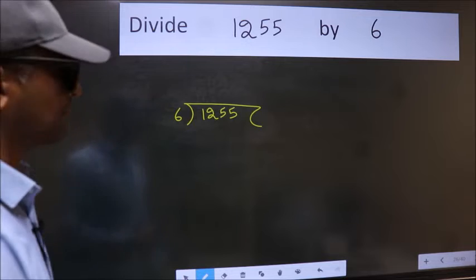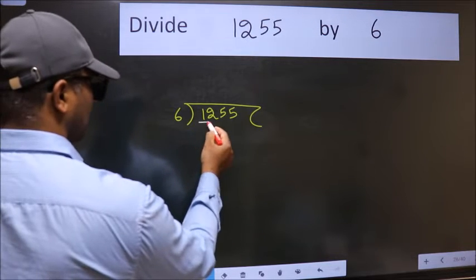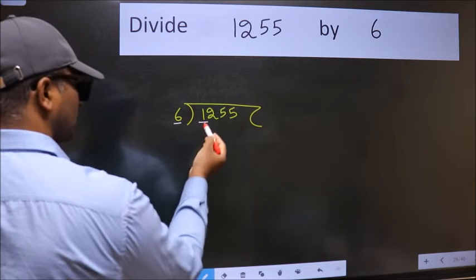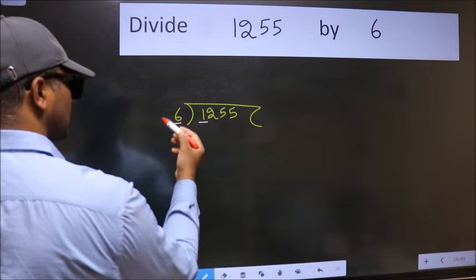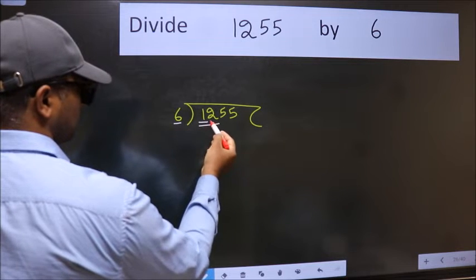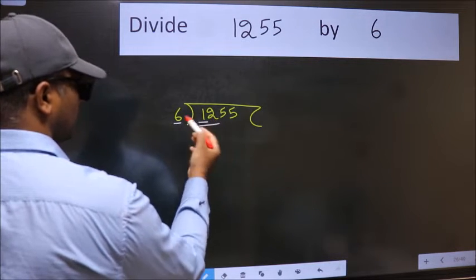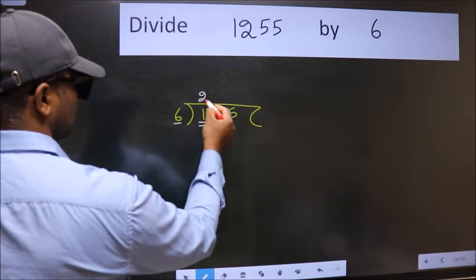Next. Here we have 1 and here 6. 1 is smaller than 6. So we should take two numbers, 12. When do we get 12 in 6 table? 6 twos, 12.